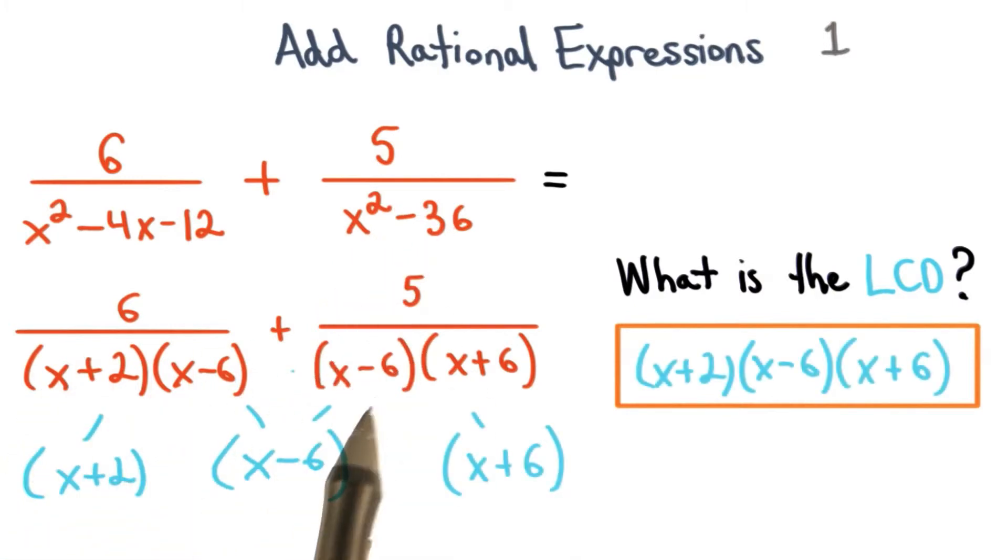We can see that both of the denominators share a common factor of x minus 6. So this is the factor they share and we list it in the middle.